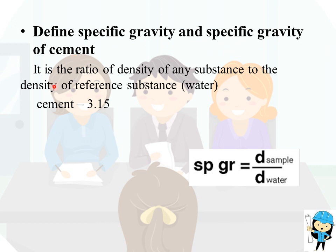Define specific gravity and the specific gravity of cement. It is the ratio of the density of any substance to the density of a reference substance. The reference substance is always water. The value of specific gravity for cement is 3.15.